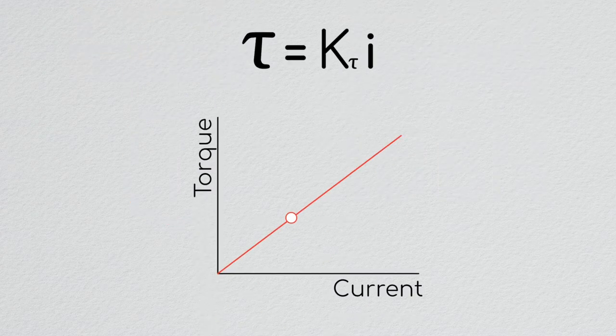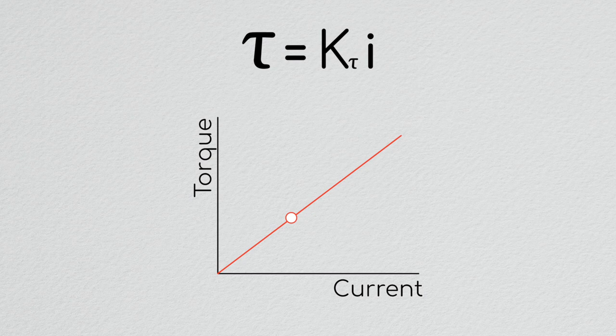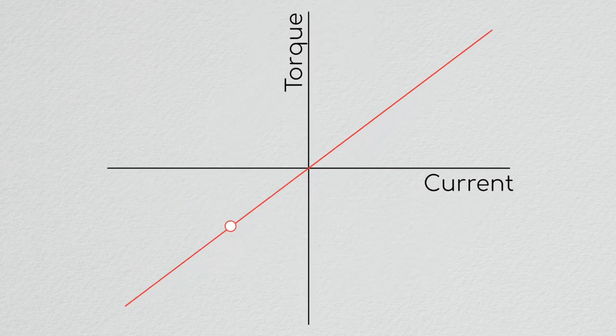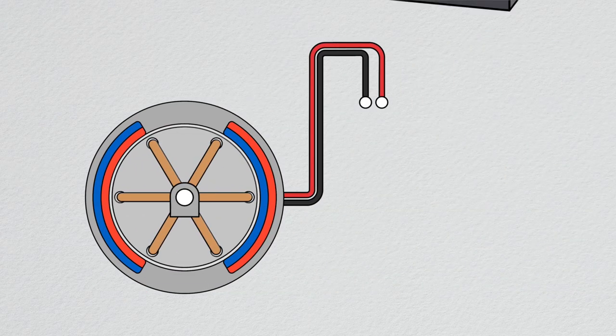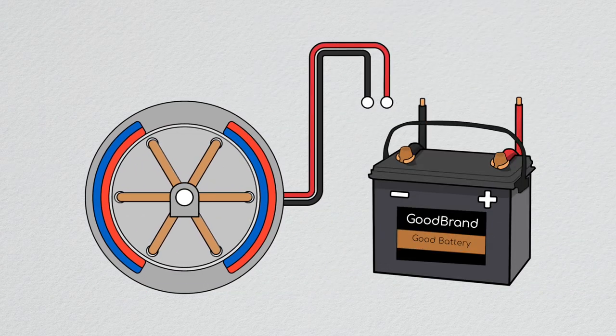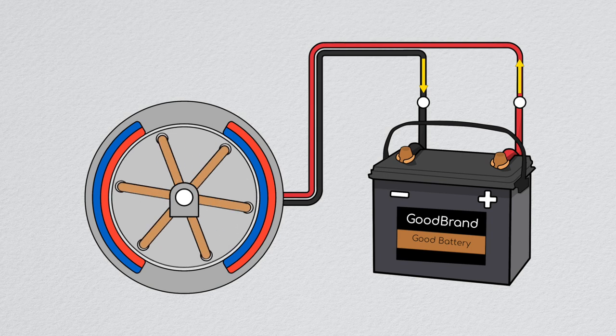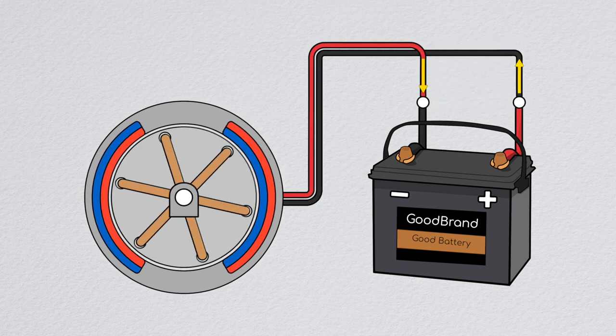Because the torque applied by the motor is directly proportional to the current running through the system, if we flip the sign of the current, we will also change the direction of the torque. In order to switch the direction of current, all we need to do is reverse the polarity of the voltage applied to the brushes, and just like that, we can turn our motor in reverse.